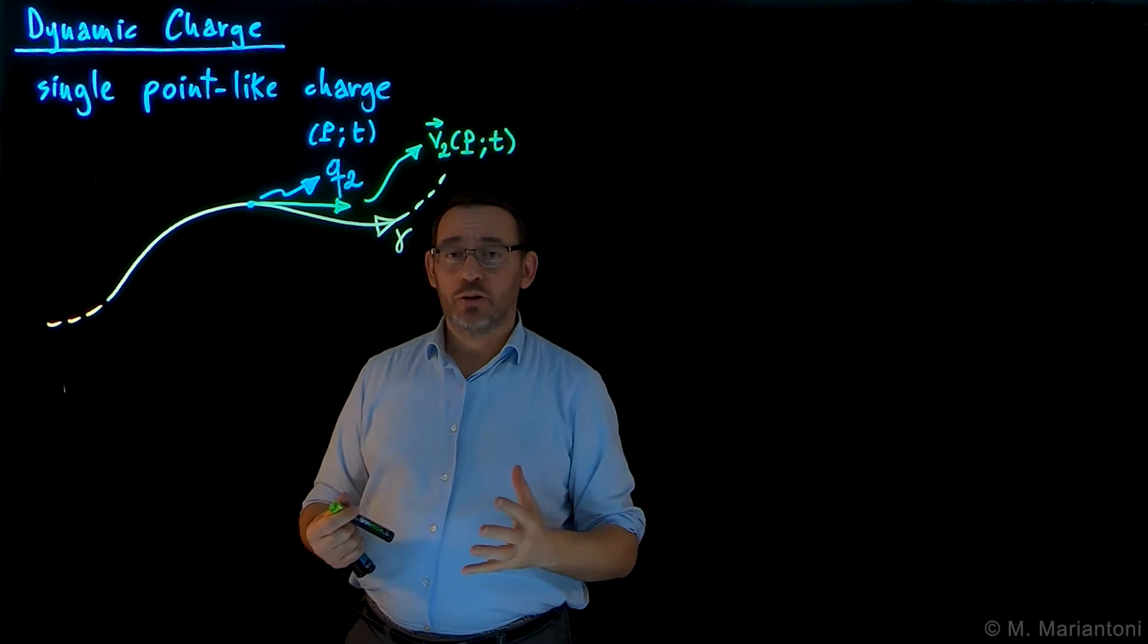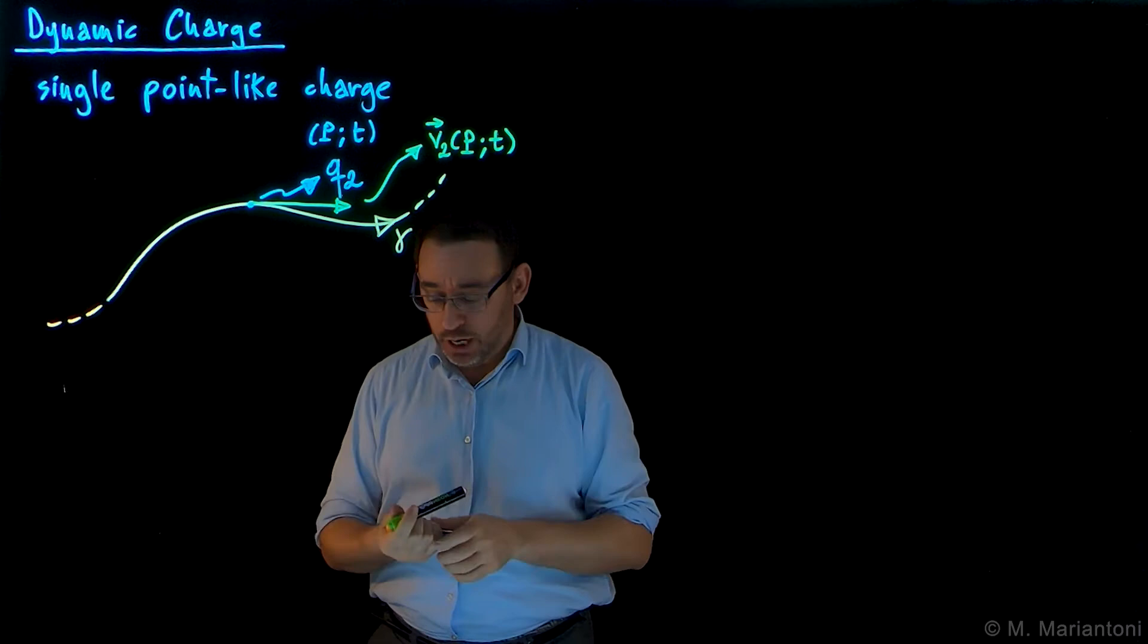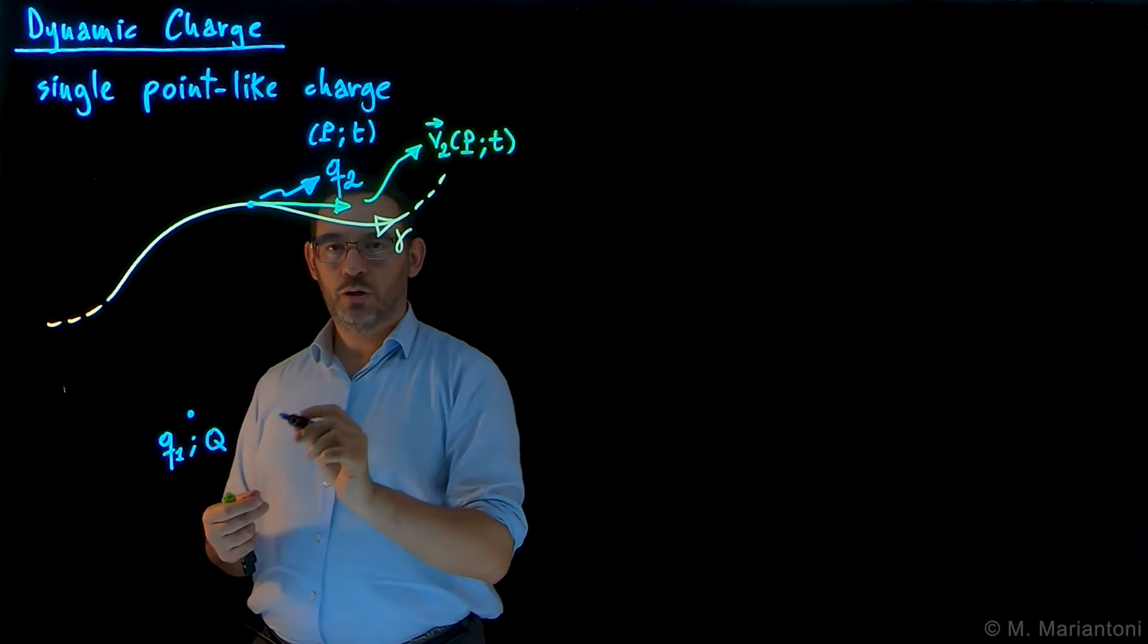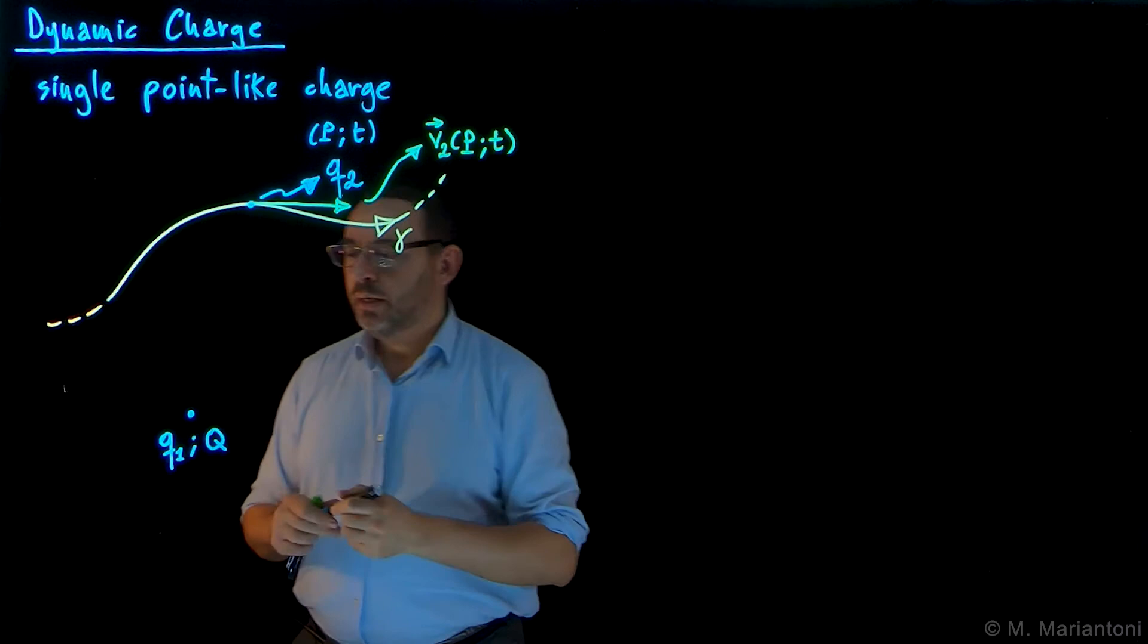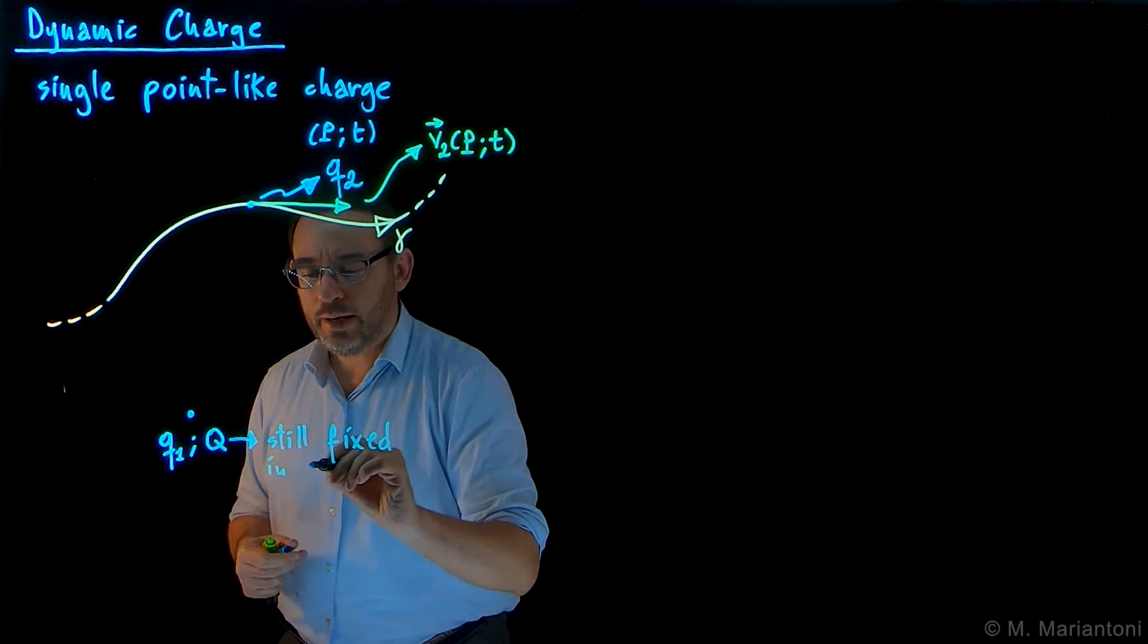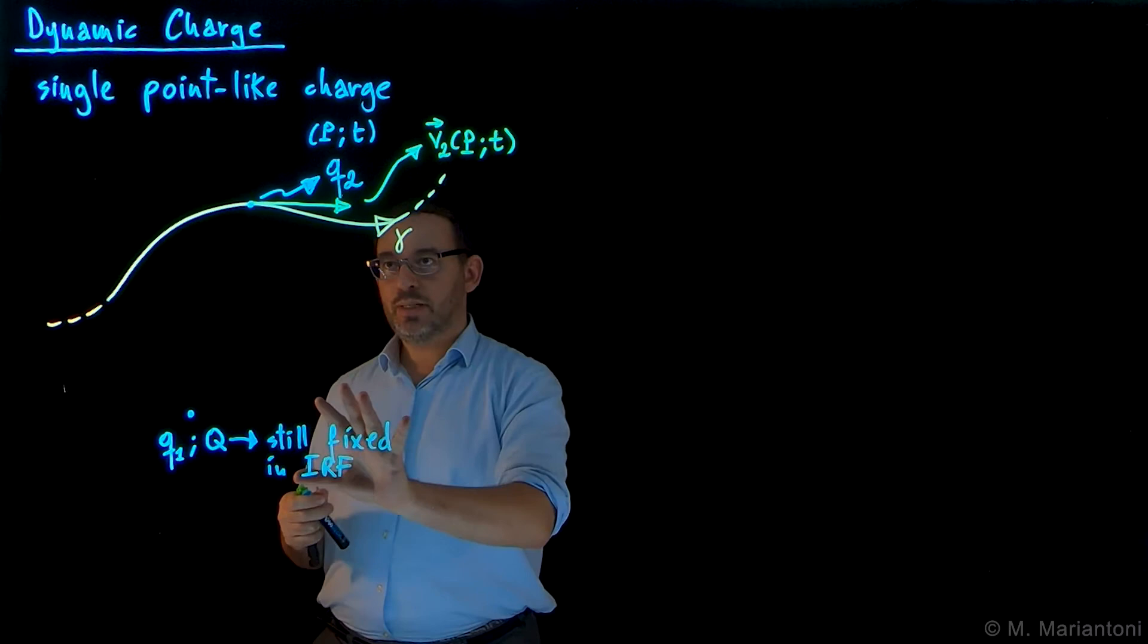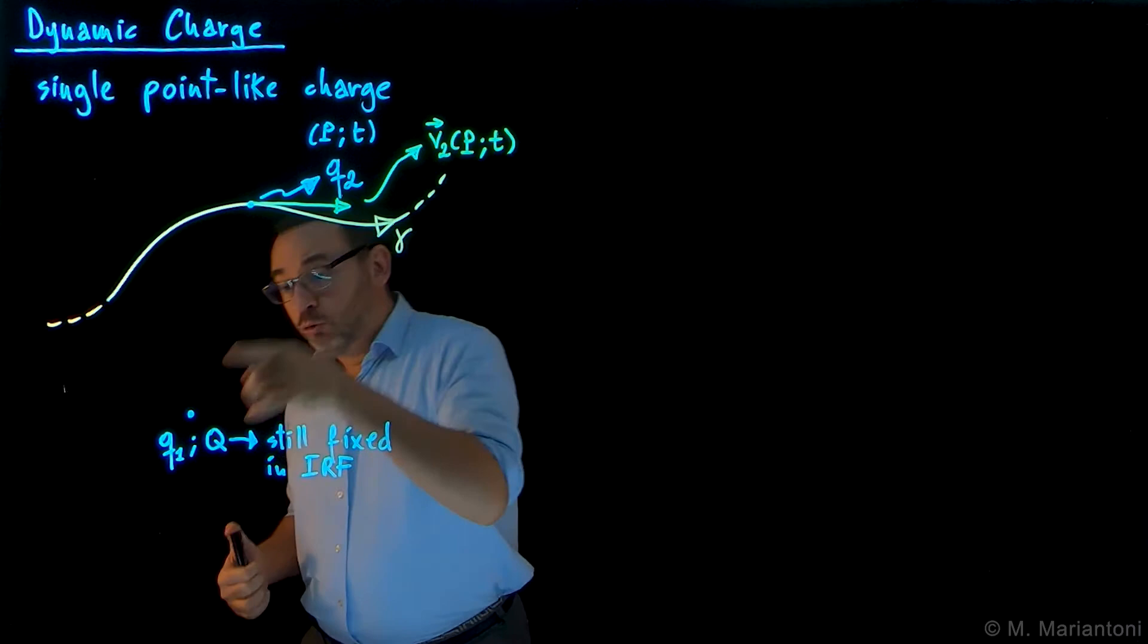This motion happens while this charge is located in the electrostatic field due to another charge, a source charge - let us call it q1. This is a source located at point capital Q, observational point capital P as always. Note that while this charge q2 is moving, this charge q1 we hypothesize is still fixed in an inertial reference frame. We still hypothesize this, whereas this one can move.